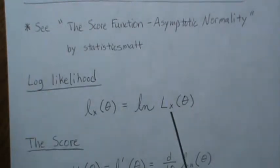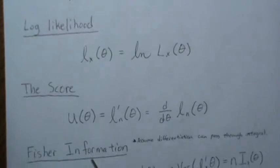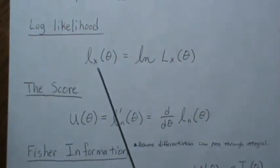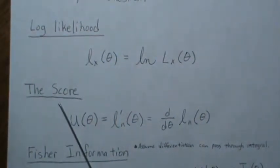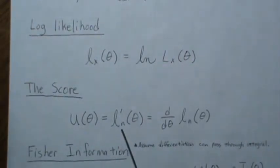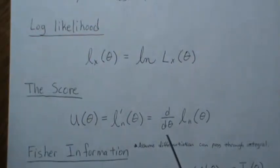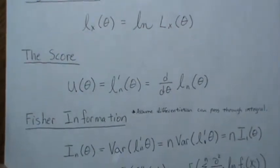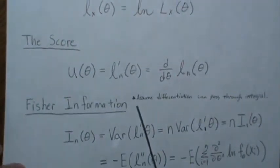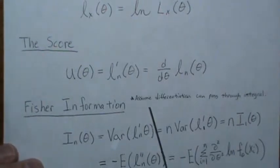When we take the first derivative of the log likelihood, it's called the score, often denoted by capital U. It's really just the first derivative of the log likelihood.